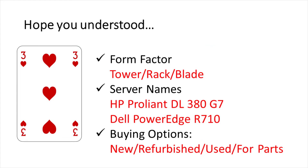With that, we come to the end of this video. We started by understanding form factor and looked at three form factors: towers, blades, and racks. We then saw that server names have a meaning and can tell you about the configuration of the server. Lastly, we looked at the four buying options and did a brief comparison between them. Hope this was useful.